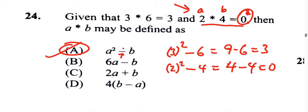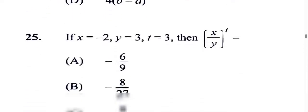Let's look at the next question. If x is -2, y is 3, and t is 3, then what is the solution to (x/y)^t?